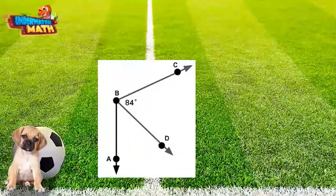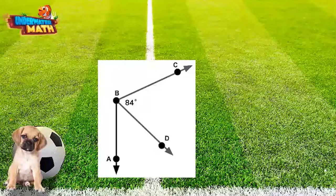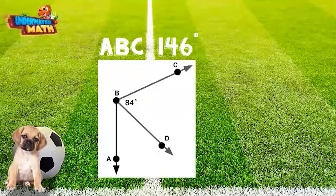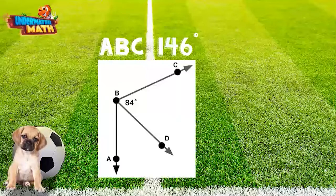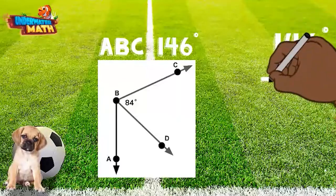What if our whole angle is not a straight line or a right angle? Let's look at this example. Angle ABC is 146 degrees, angle CBD is 84 degrees. To find the missing angle, subtract the piece we know from the whole.